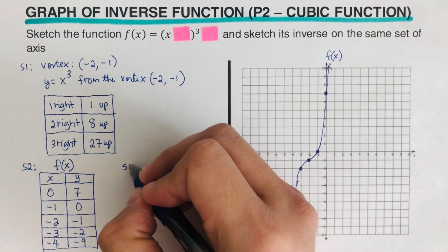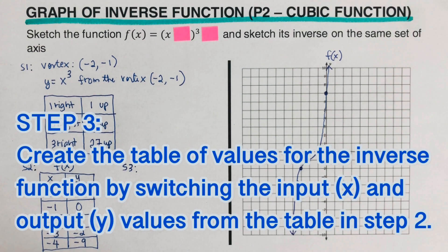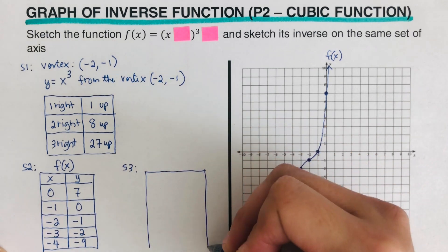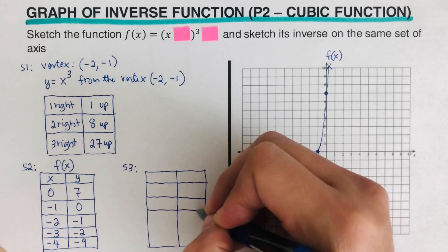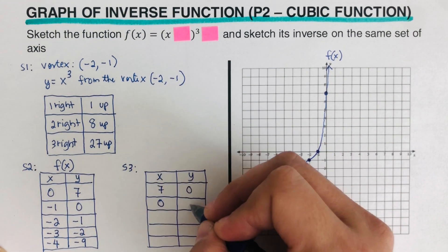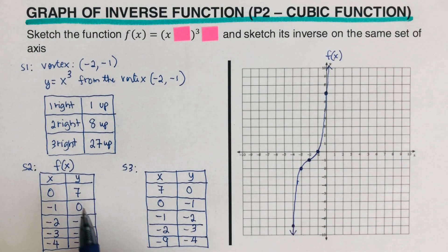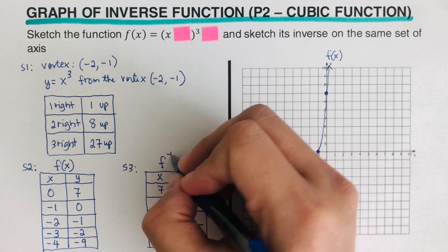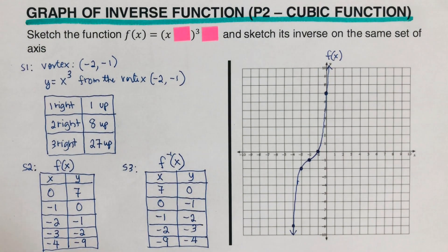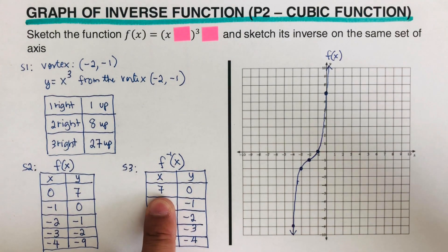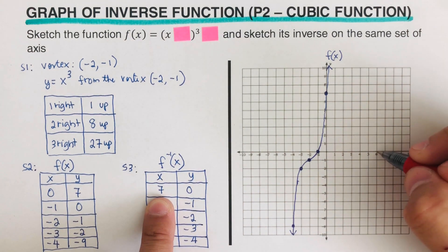Step 3: Create a table of values for the inverse function by switching the input x and output y values from the table in Step 2. We recreate the table with the values switched — this is our f⁻¹(x). We then sketch the graph using this table, starting with the point (7, 0), which goes right here.